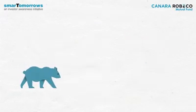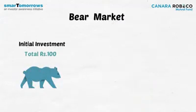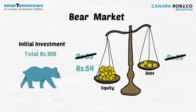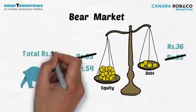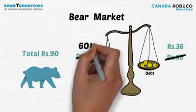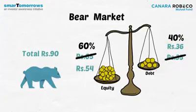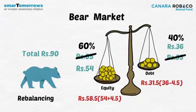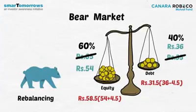Similarly, when the equity market is in the bear phase, say the value of equity investments goes down from Rs.65 to Rs.54 and debt investments to Rs.36. The total investment value becomes Rs.90, and we see that the allocation to equity has reduced to 60% and debt increased to 40%. The fund is rebalanced and brought back to 65% equity and 35% debt. This time money is moved from debt to equity to rebalance.